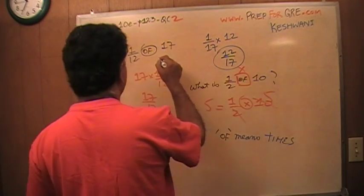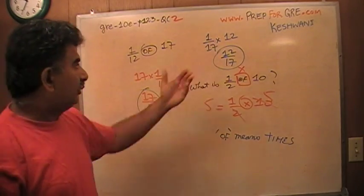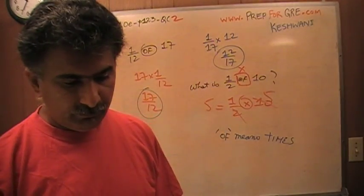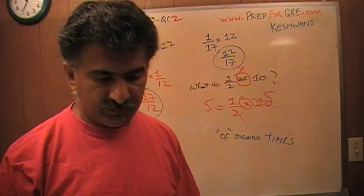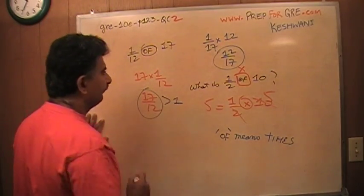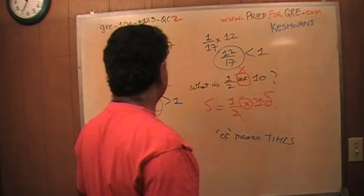So your job is to figure out which quantity is bigger. 17 over 12, or 12 over 17. Is there, what, this? It can't be that simple, can it? Oh, this is too simple. This is only question number two. You see? That's why it's so simple. Of course, this one is bigger because this is more than one. That's less than one. This quantity is less than one. So the answer is A.